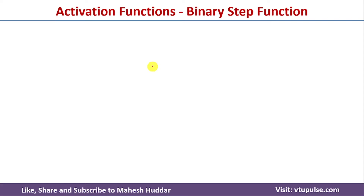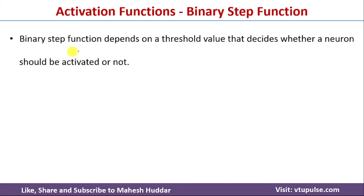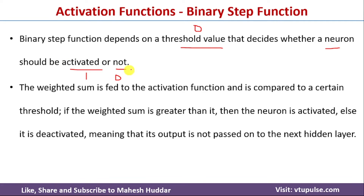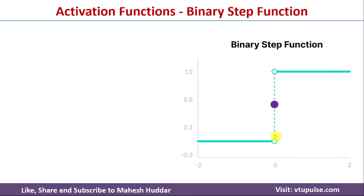Now I will discuss the binary step function in neural networks. The binary step function depends on a threshold value — in this case the threshold value is equal to 0. If the calculated weighted sum is greater than or equal to 0, the neuron is activated and its value is 1. If it is less than 0, the neuron is not activated and its value is 0. As shown in the graph, if the calculated value is greater than 0 the output is 1, and if it is less than 0 the output is 0.